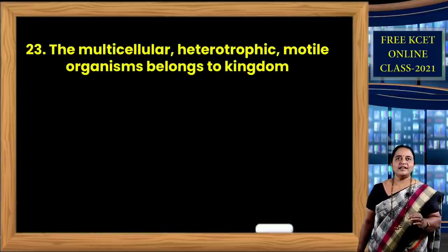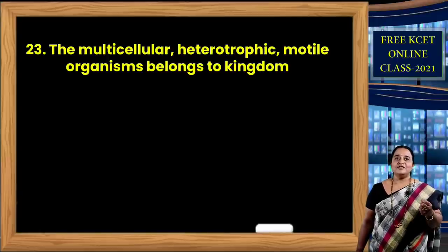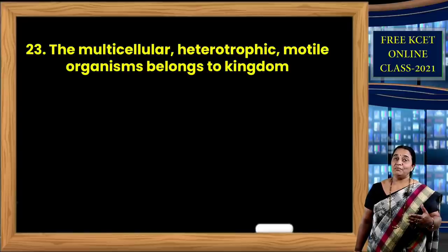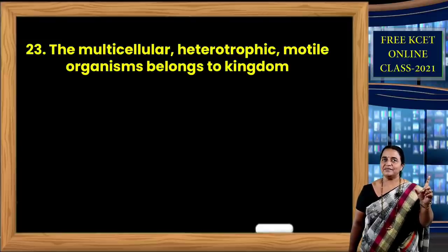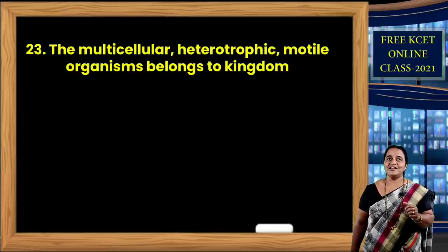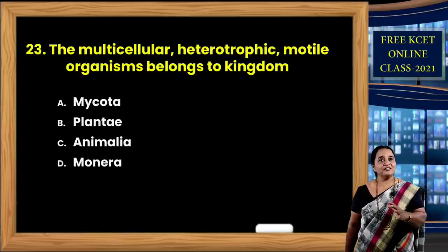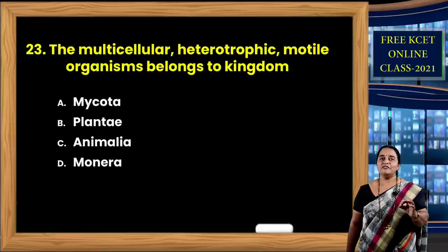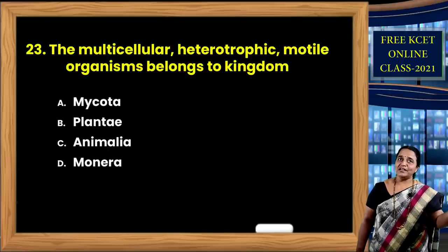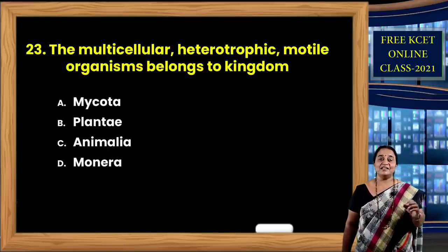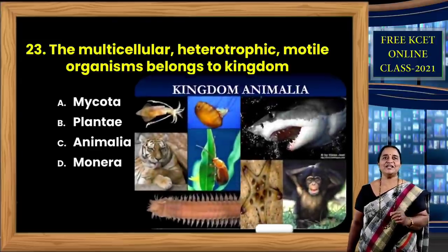Question 23: Multicellular, heterotrophic, motile organisms belong to — give stress on every word. Mycota includes fungi — multicellular and heterotrophic but not motile. Plantae — multicellular but autotrophic. Monera — unicellular prokaryotes, not multicellular. So the correct option is C — Animalia — as animals are multicellular, heterotrophic, and motile, as per Robert Whittaker's phylogenetic five-kingdom classification.